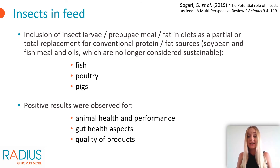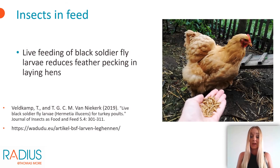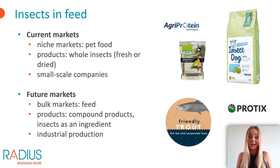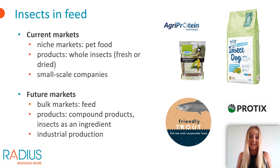In the previous slides, we saw that the composition of insects sometimes differs from soybean meal and fish meal. So more research needs to be done before recommendations about quantities of insects to add to feed can be made, so that the composition is similar to feed based on soybean meal or fish meal. Also, feeding hens with living black soldier fly larvae would reduce feather pecking in laying hens. Currently, insects are mainly used in pet food — this is still a niche market in which insects are sold as a whole. Mainly small-scale companies are engaged in this. But in the future, there should also be bulk markets with production on an industrial scale, as feed for several animal species including livestock, which will lower the cost price of the production process. But for this, insect production still needs to be optimized.